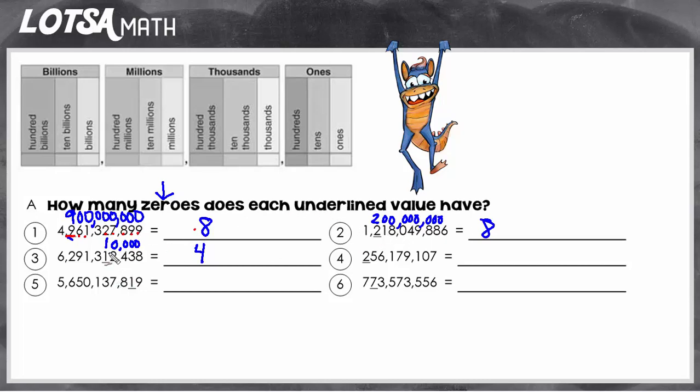Same thing here. This one, there, after the underlined digit, there are one, two, three, four more digits. So all of those four digits turn to zero, and the value would have four zeros.